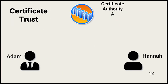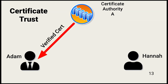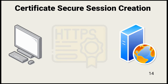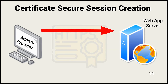Certificates enable entities to trust each other regardless of location or whether human or technology. Adam has a certificate issued by Certificate Authority A in our example. Hannah also trusts CAA. Because of that trust, Hannah will trust Adam when he presents his certificate and she validates it. Each browser is installed with a list of trusted certificate authorities, which speeds up the certificate verification process. CAs can be added to or deleted from this list. Adam wants to establish a secure HTTPS connection with a web server, and the secure session begins by the server authenticating itself.